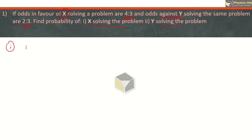Let us define event x which says that x can solve the problem. Odds in favor of 4 is to 3 means if x tries to solve this problem 7 times, it will solve the problem 4 times and will not solve it 3 times. Odds in favor means the first number is in favor of solving the problem. So the probability that x will solve the problem is 4 by 7.